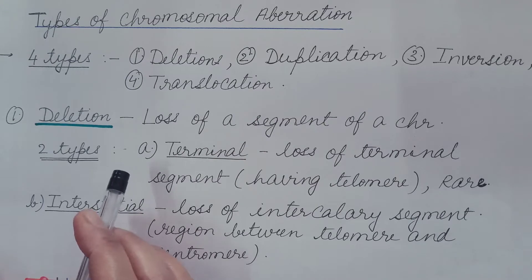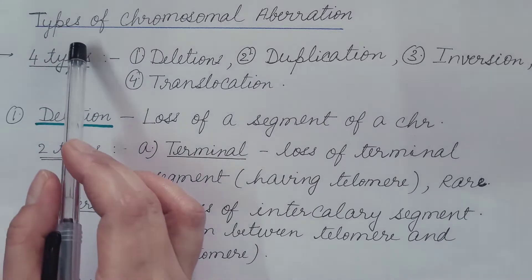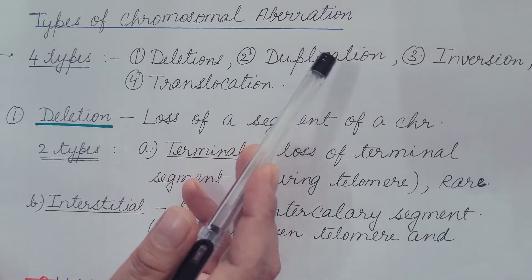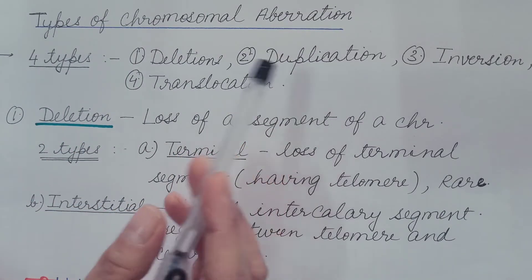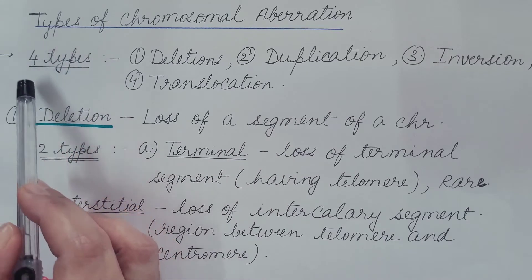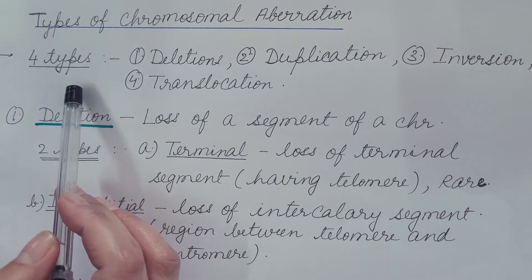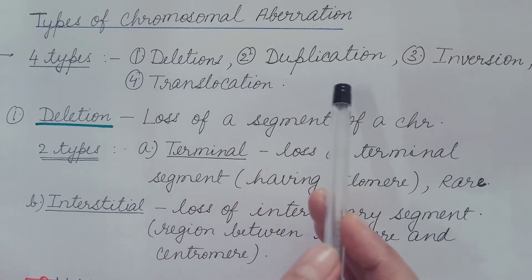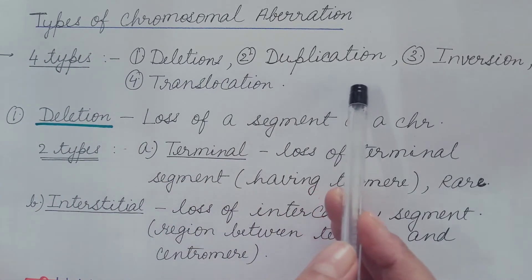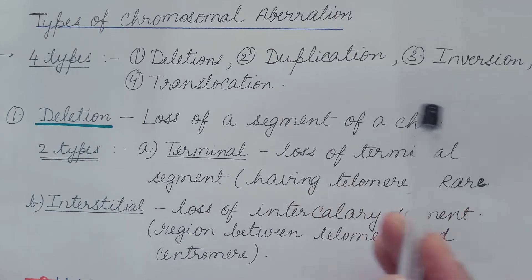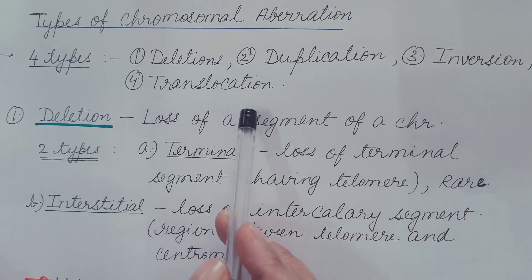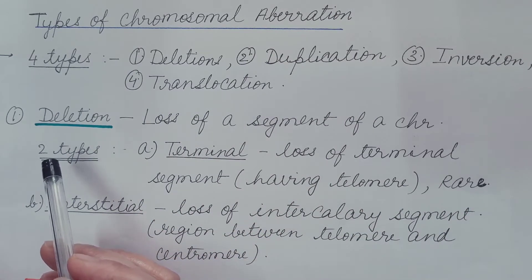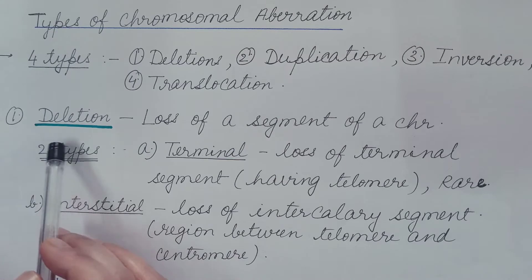Now let us see the types of chromosomal aberration. There are four types: deletion, duplication, inversion, and translocation. Let us see them one by one.